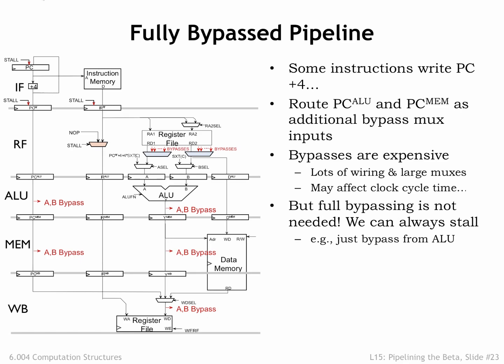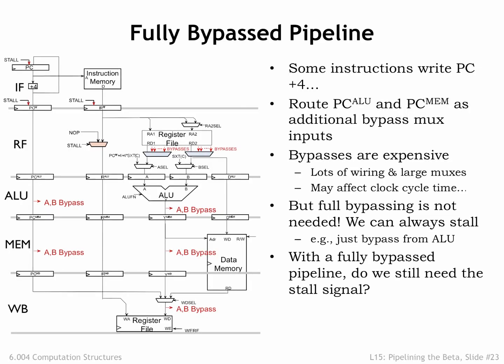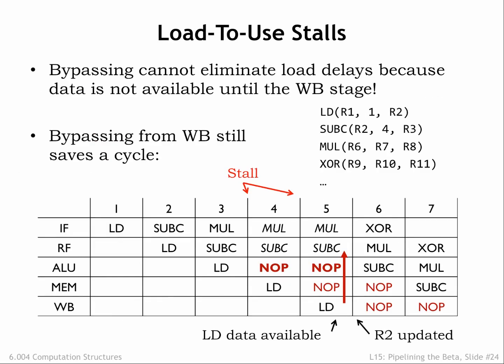We can cut back on costs by reducing the amount of bypassing — say, to only bypassing ALU results from the ALU stage — and use stalling to deal with all other data hazards. If we implement full bypassing, do we still need the stall logic? As it turns out, we do. There's one data hazard that bypassing doesn't completely address: the load-to-use hazard. Consider trying to immediately use the result of a load instruction — the SUBC is trying to use the value the immediately preceding load is writing to R2.